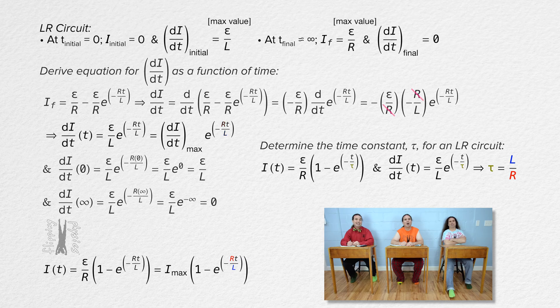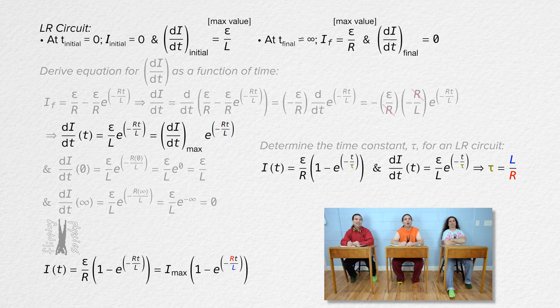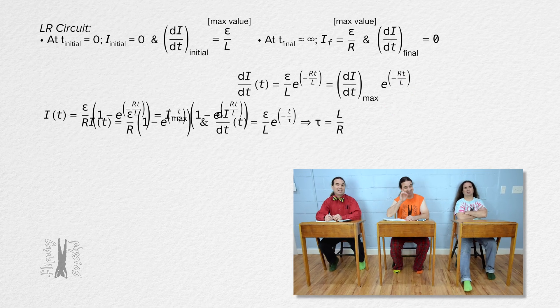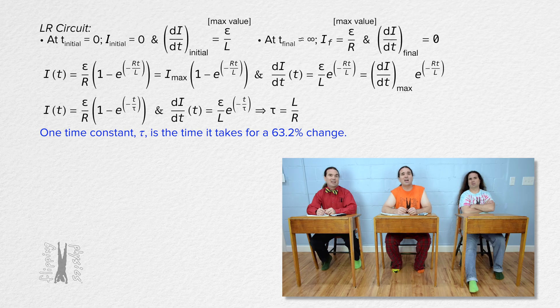But what is the time constant? One time constant is the time it takes for a 63.2% change.